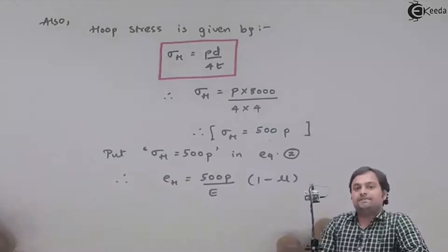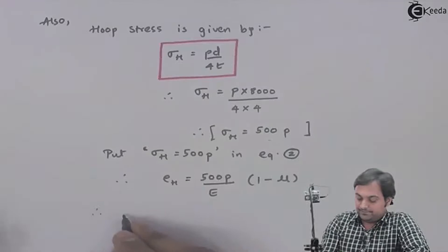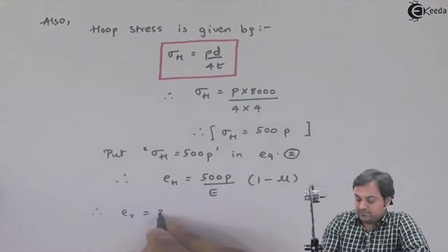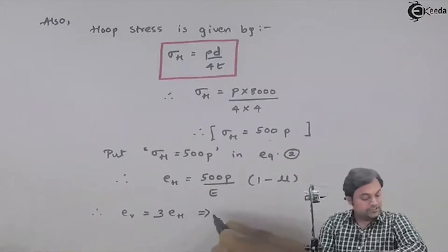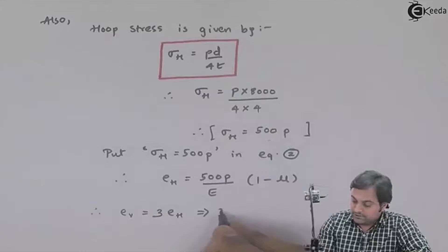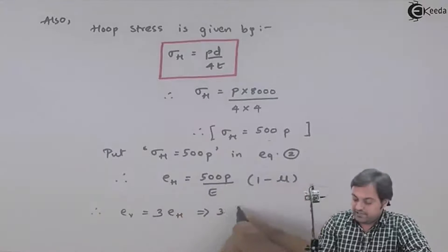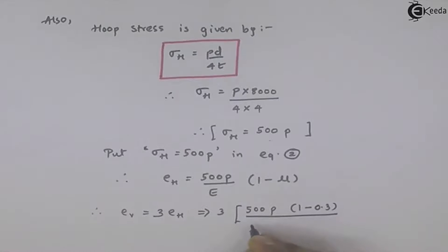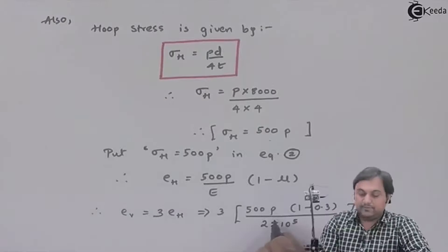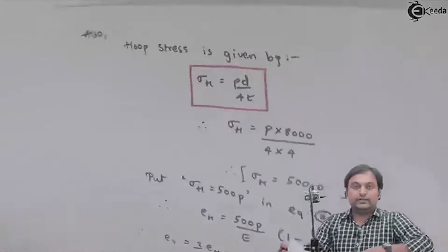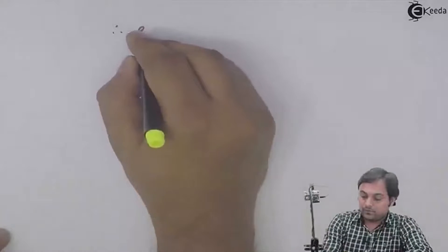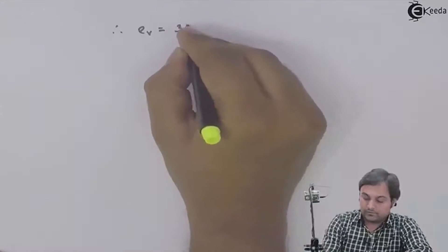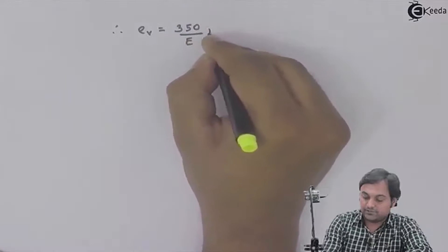Since volumetric strain equals three times the hoop strain, we get e_V = 3 × (500P / E) × (1 − μ). With μ = 0.3 and E = 2×10⁵, this simplifies to volumetric strain = 350P / E. This is equation number 3.